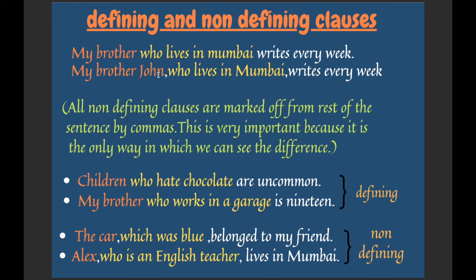Non-defining adjective clauses are also known as non-restrictive clauses — they provide additional, non-essential information. A very important point: all non-defining clauses are marked off from the rest of the sentence by commas. This is the key way to tell the difference. If you see commas setting off the clause, it is non-defining. In defining clauses, commas are not used, but in non-defining clauses, they always are.